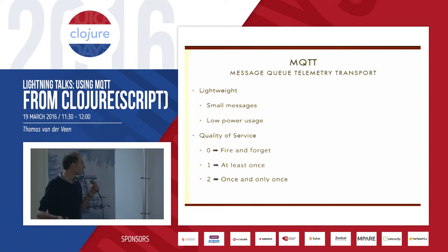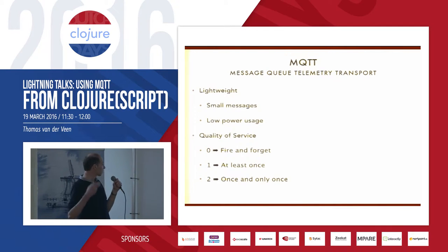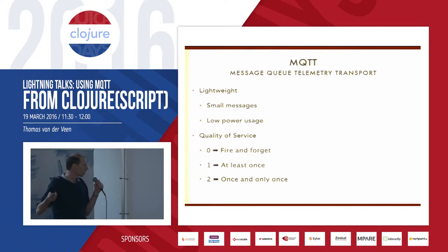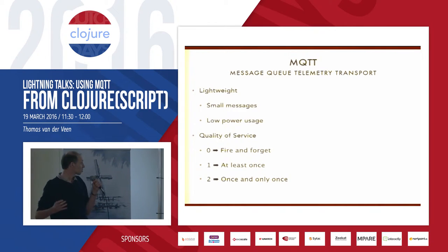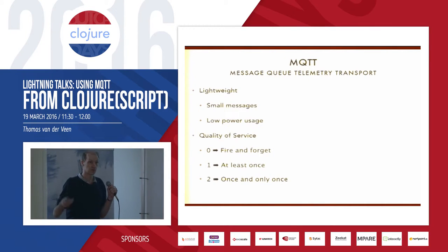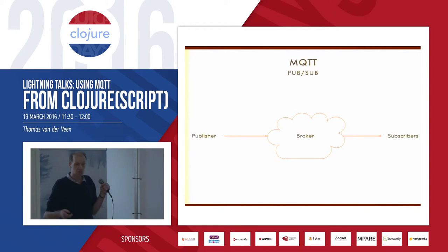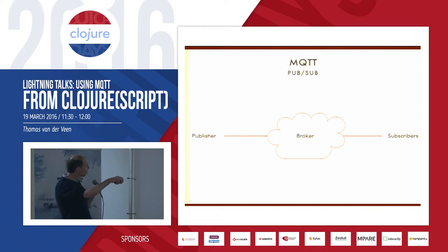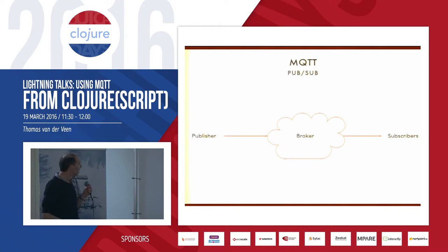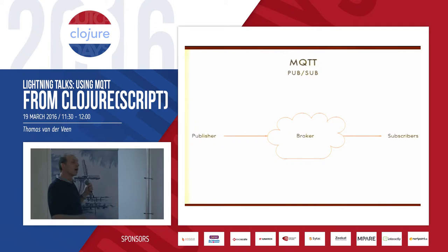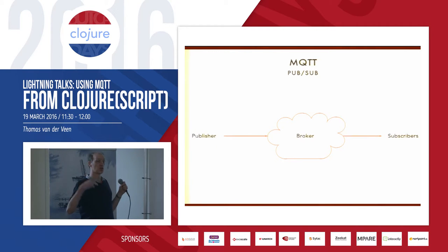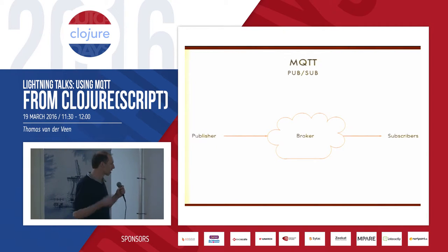It has various qualities of service for the pub-sub: fire and forget is quality of service zero, one is at least once, and two is once and only once — so it's reliable. Here's a simple picture of how you can use it. You've got your broker, which has to be somewhere on the internet. You have your publisher and your subscriber, and you send messages over a topic, which we'll get to in a minute.